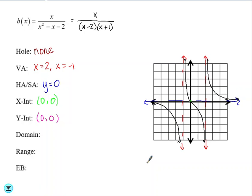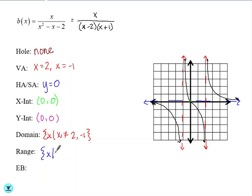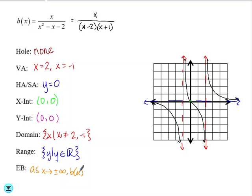Our domain is x such that x does not equal 2 or negative 1. Our range — we need to be careful. If you look at this middle part of the graph, that section has a range of all real numbers, which means overall our graph's range is all real numbers. Our end behavior: as x approaches positive or negative infinity, b of x approaches the horizontal asymptote of 0.